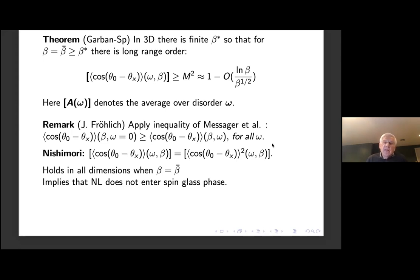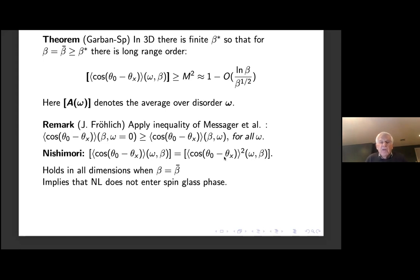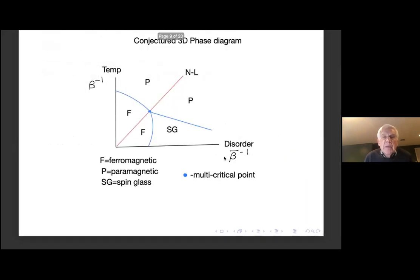This identity can only be valid because the expectation can take negative values, so when you average it you can get this identity. That comes from the gauge invariance. We'll see identities very much like this which are very important. Let me come to the conjectured three-dimensional phase diagram, and I'll spend a little time explaining this diagram.